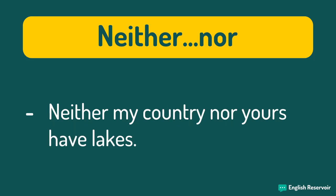Neither my country nor yours have lakes. So both countries do not have lakes, therefore we have two of the same. The best way to express this is with neither, nor.